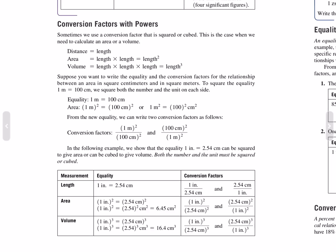In the following example, we show that the equality 1 inch equals 2.54 centimeters can be squared to give an area equality or cubed to give a volume equality. Both the number and the unit must be squared or cubed. Area: 1 inch squared equals 2.54 centimeters squared. Volume: 1 inch cubed equals 2.54 centimeters cubed.